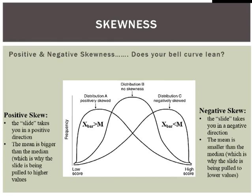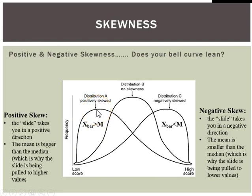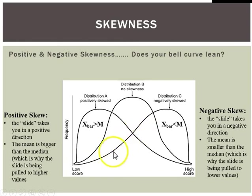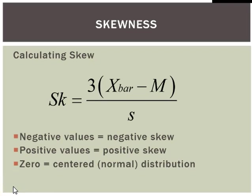This can be counterintuitive, so I like to think of it in terms of a playground slide. If I go up the slide and slide down toward higher values, that's a positive skew. In that case, the mean is much more impacted by those extreme values, so the mean x-bar is going to be greater than the median for positively skewed distributions. The flip side: if I come up my slide and slide down toward lower values, this is a negatively skewed distribution, and the mean x-bar should be lower than the median value.